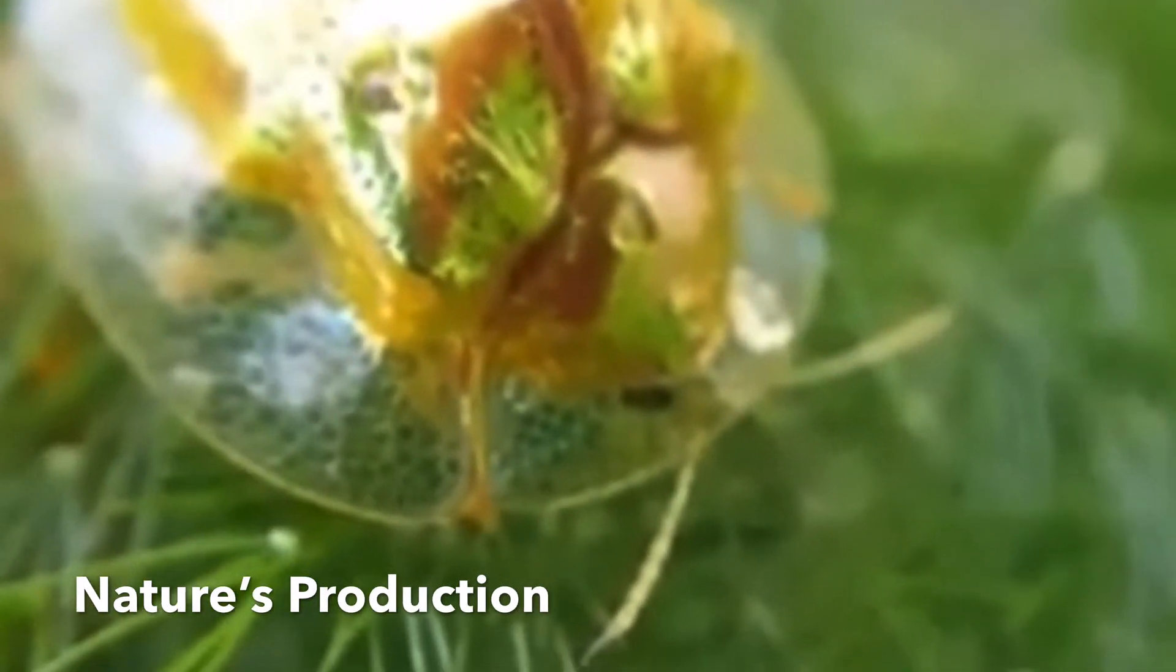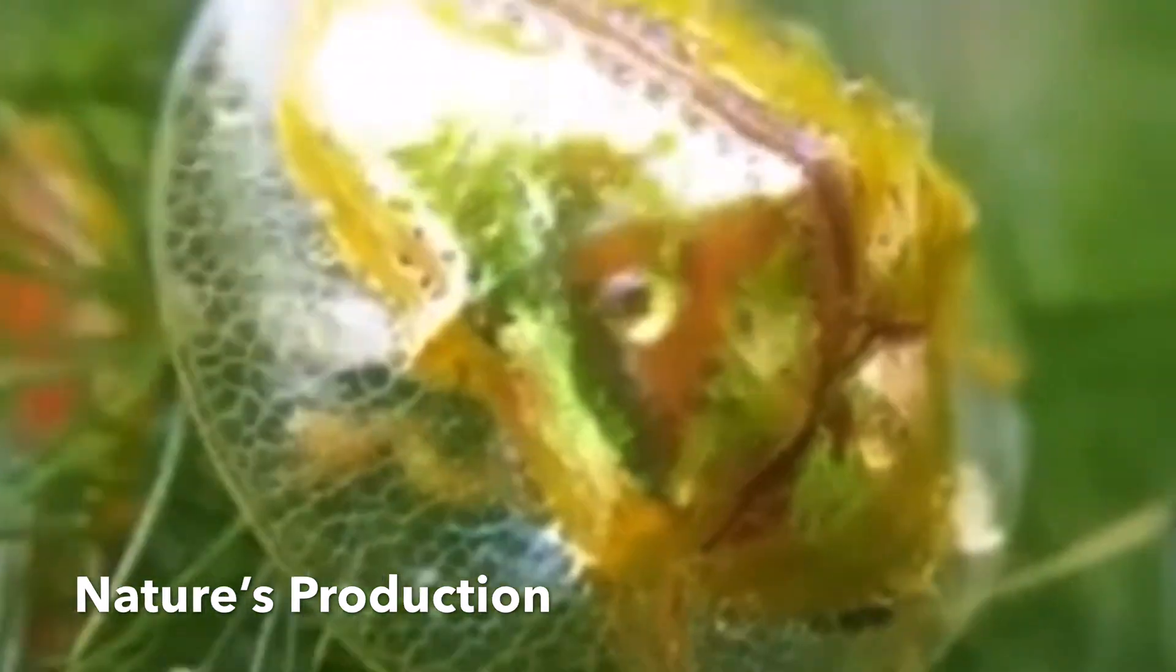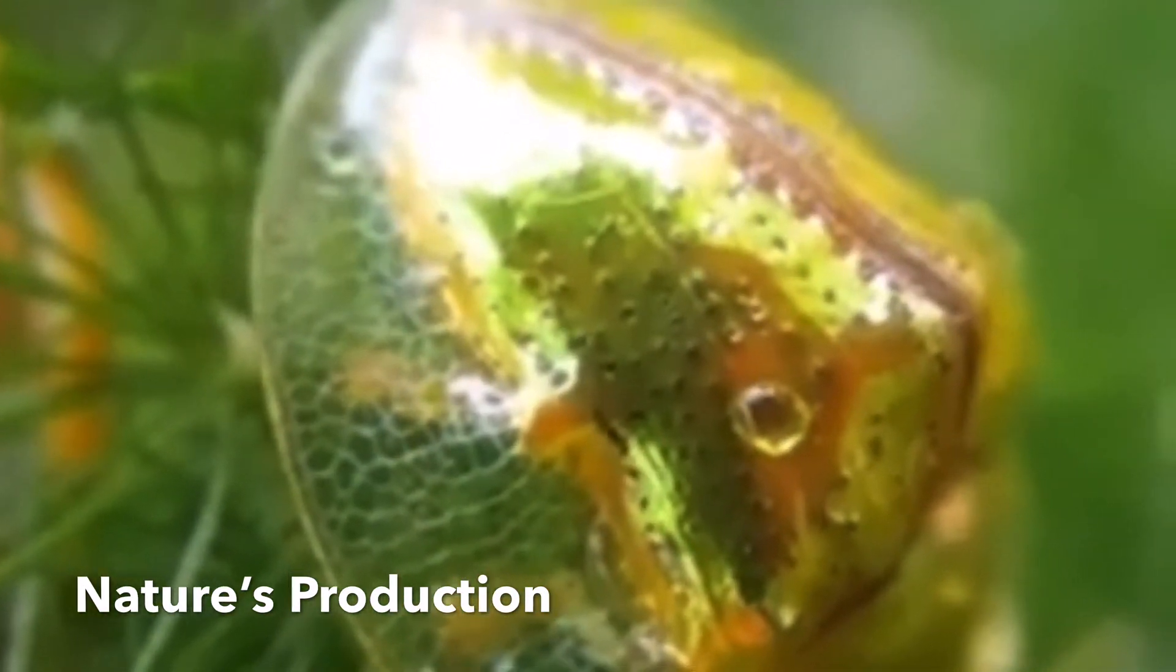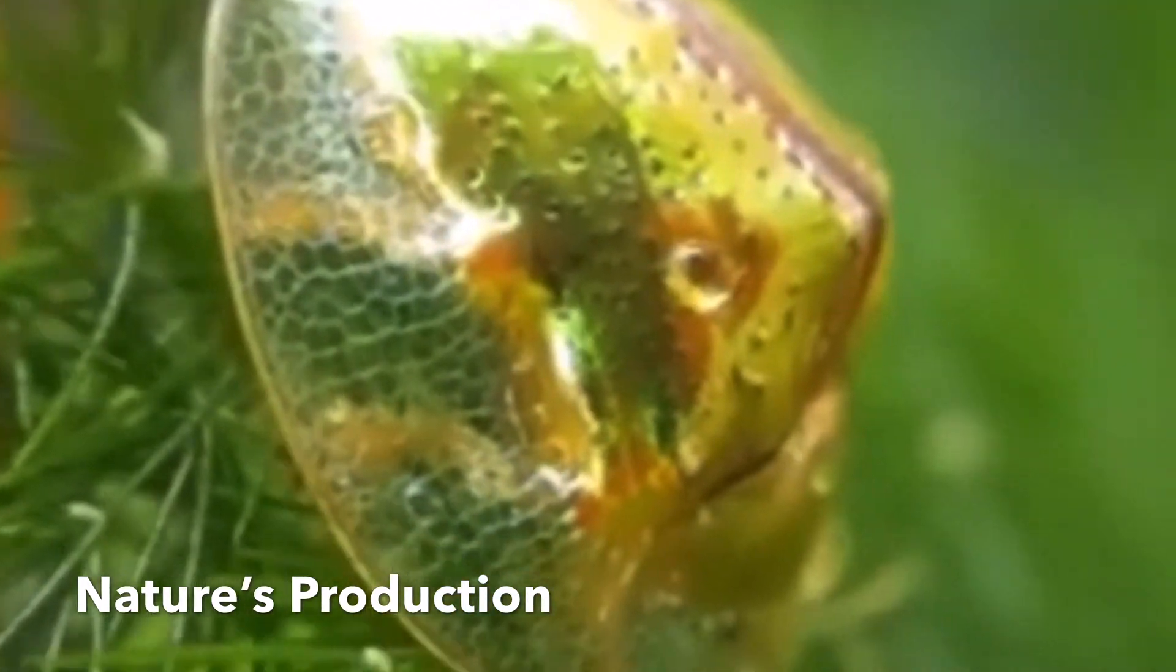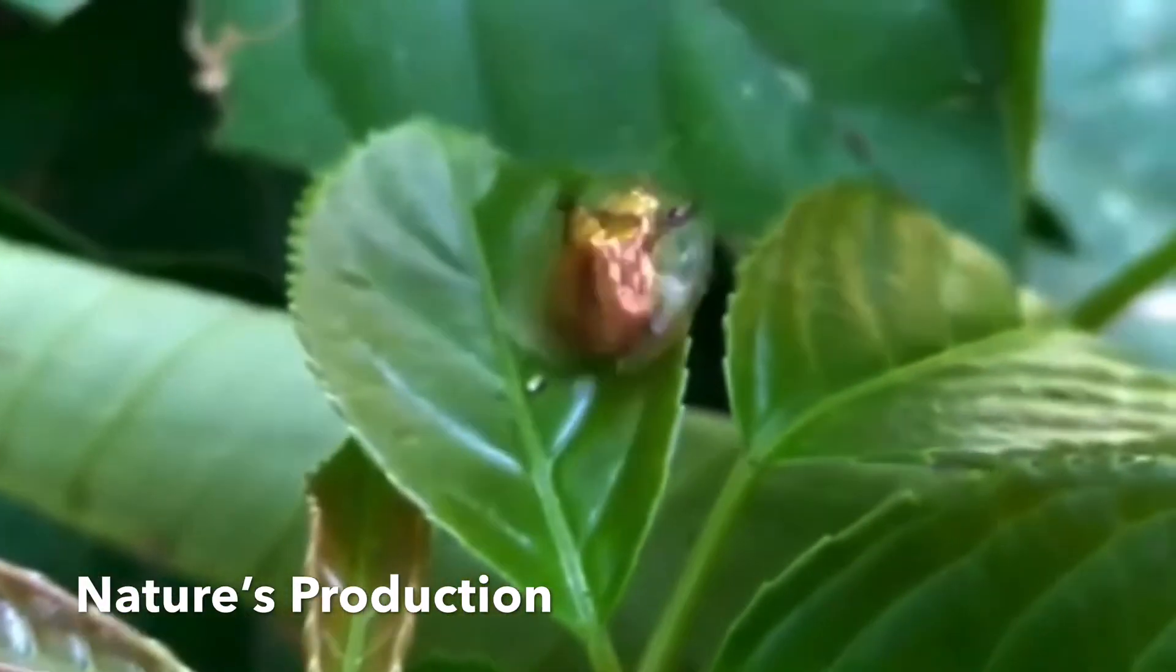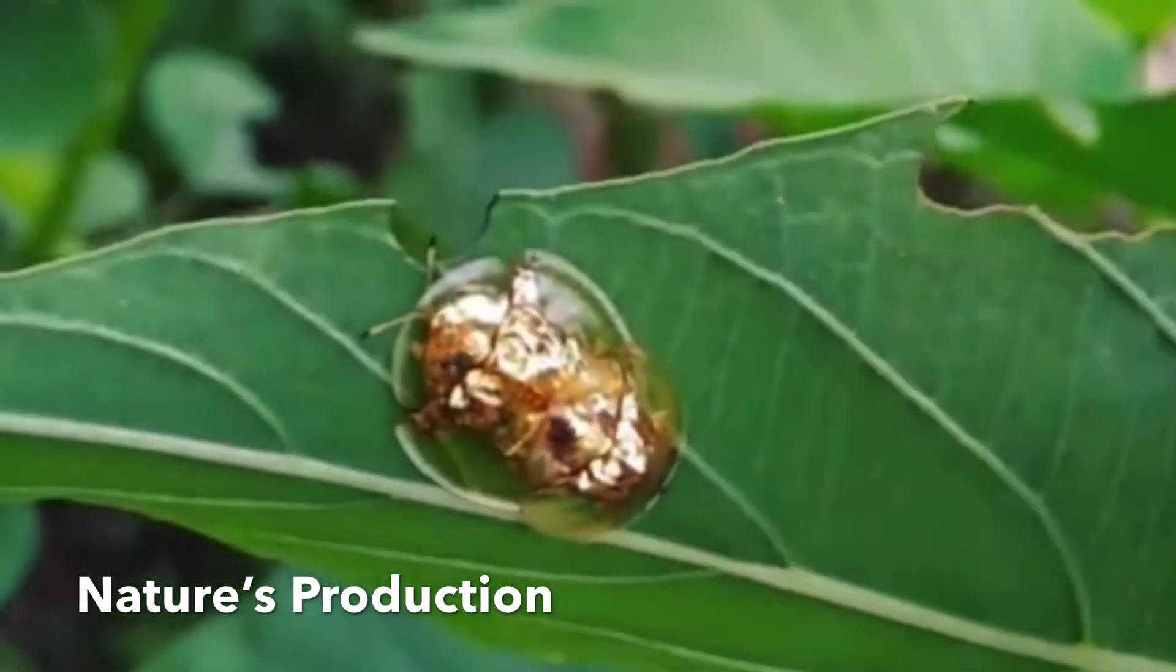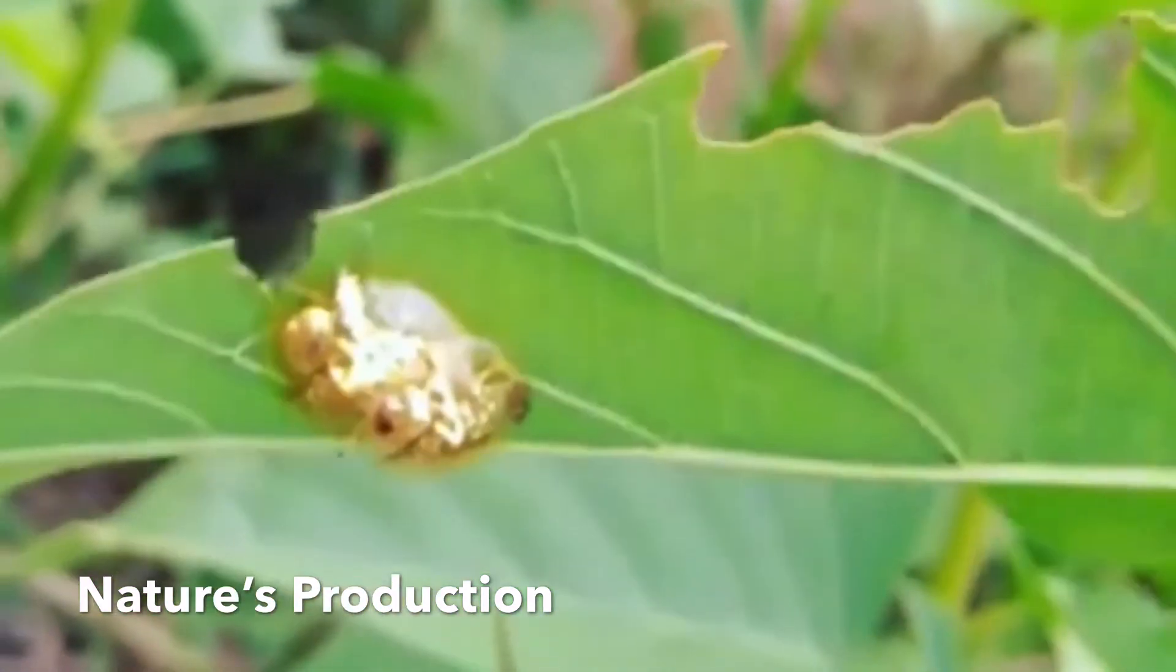A spiny, yellowish or reddish brown larva emerges from its eggs in 5 to 10 days. The larva accumulates its shed skin and frass on a structure called an anal fork, which it positions over its body as a fecal shield, evidently hiding the larva from predators.